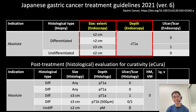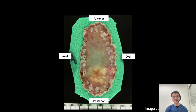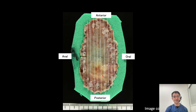I have explained endoscopic diagnosis of tumor extent and tumor depth. Finally, I would explain how to make histological diagnosis of tumor extent and tumor depth in resected specimens. Accurate histological diagnosis of the resected specimen is as important as pre-treatment diagnosis and endoscopic resection technique. To evaluate curability of the resected specimen, the size and depth of tumor invasion are evaluated in histological findings. After resection, the specimen is pinned on a cork board, fixed in formalin, then sectioned into every 2 to 3 mm strips and photographed.